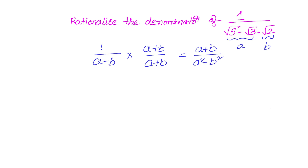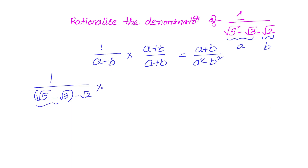We'll try rationalizing the denominator and see if one more step is needed. When taking (√5 − √3) as 'a' and √2 as 'b', you're welcome to take √5 as 'a' and (√3 + √2) as 'b' — different options are valid and the answer will be the same. We rationalize 1 by (√5 − √3 − √2), treating (√5 − √3) as 'a' and √2 as 'b', so we multiply with (a + b)/(a + b).